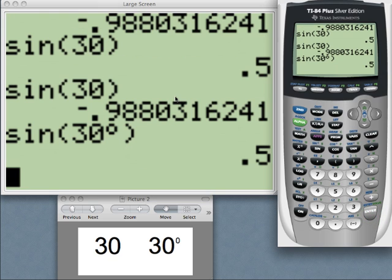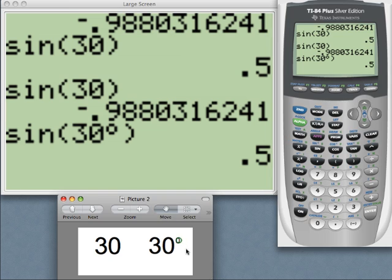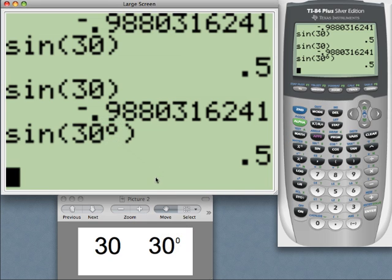So if you're nervous about switching back and forth between radians and degrees and forgetting about which mode you're in and making a mistake on your problem, just always leave your calculator in radian mode. And then when you come across a problem that deals with degrees, just make sure to enter the degree symbol into your calculator, and then you'll know you're right.